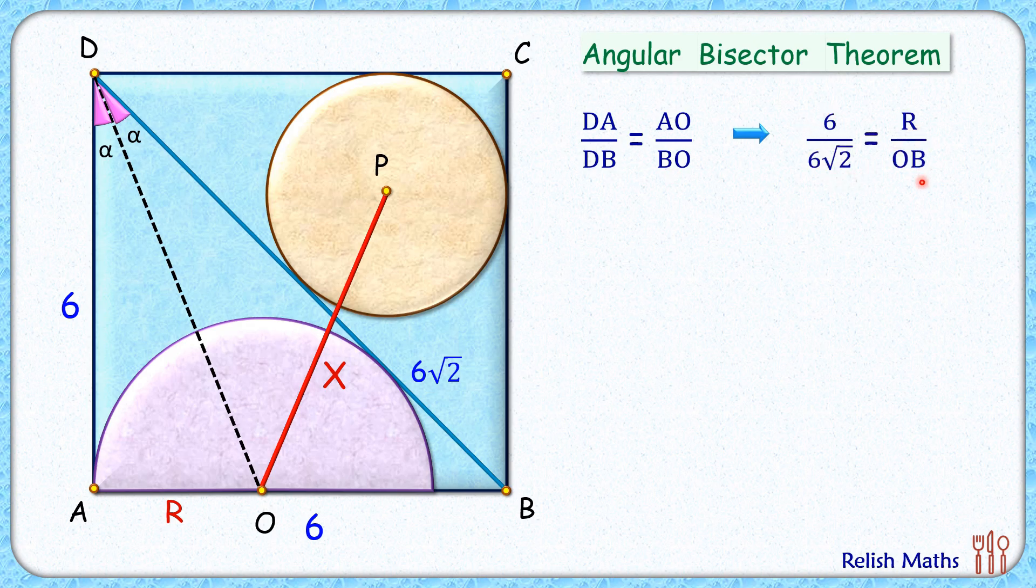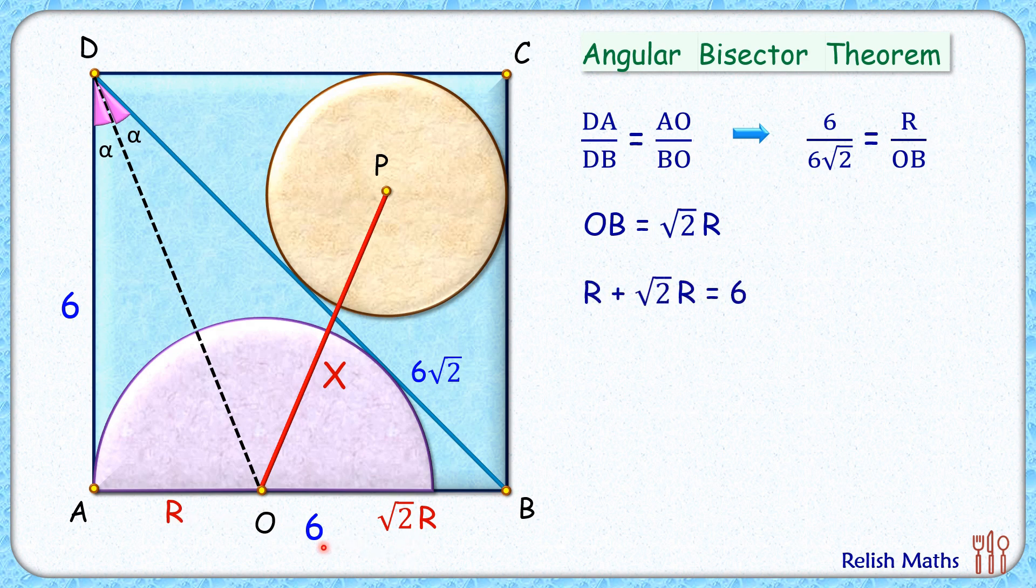Solving, we'll get the value of OB as √2·r. So this length OB is √2·r. Here we are getting r + √2·r = 6, and solving we'll get the value of r as 6/(√2 + 1) centimeters. Simplifying, this is 6(√2 - 1) centimeters.